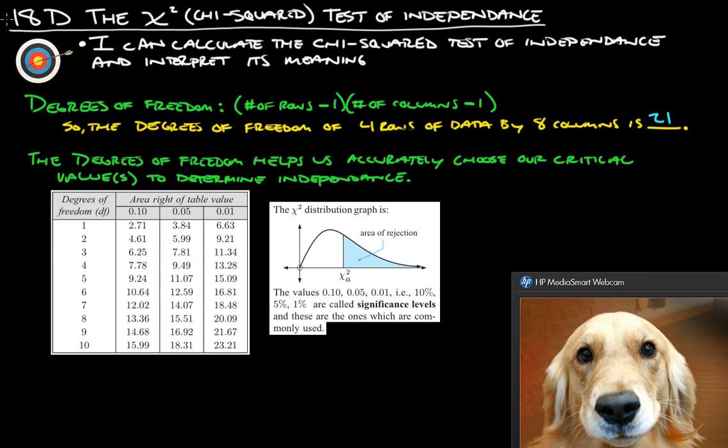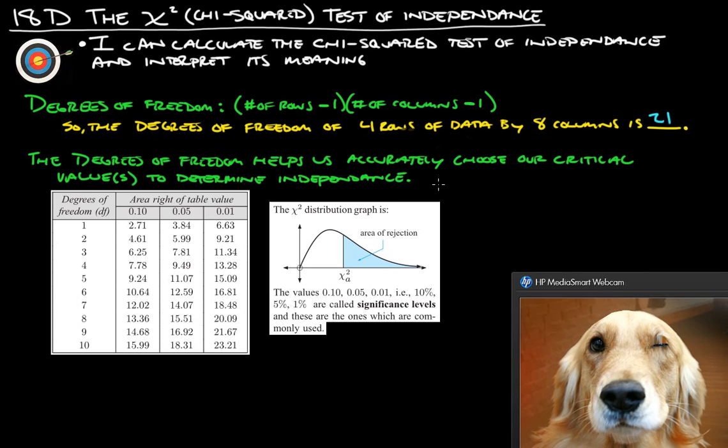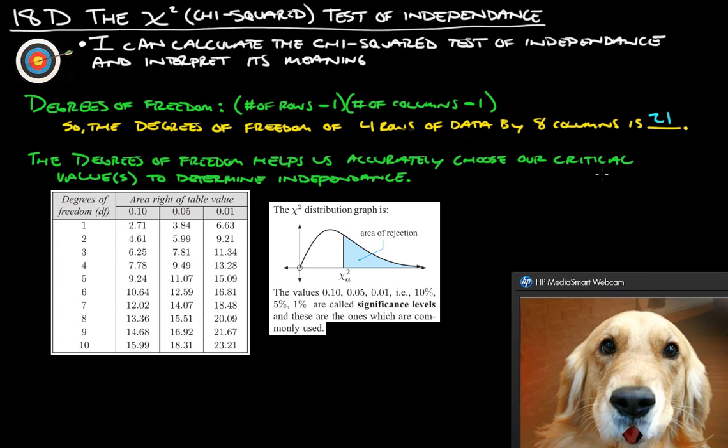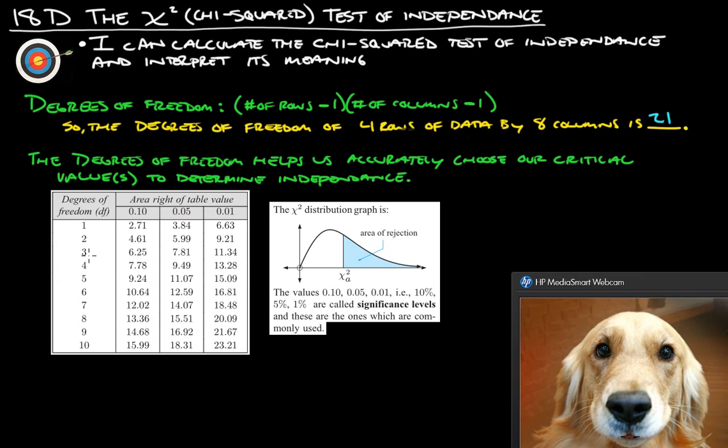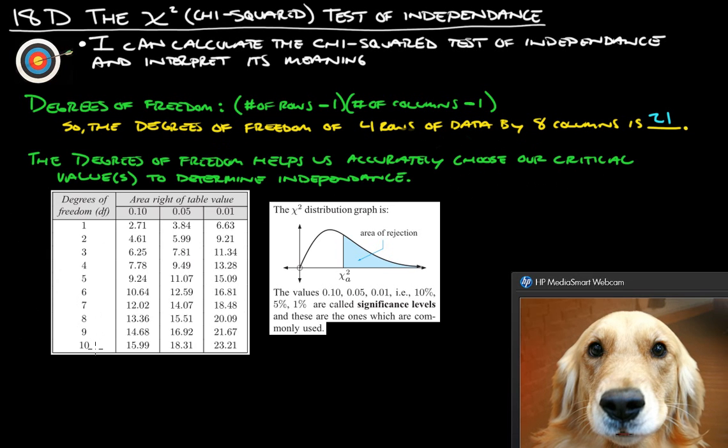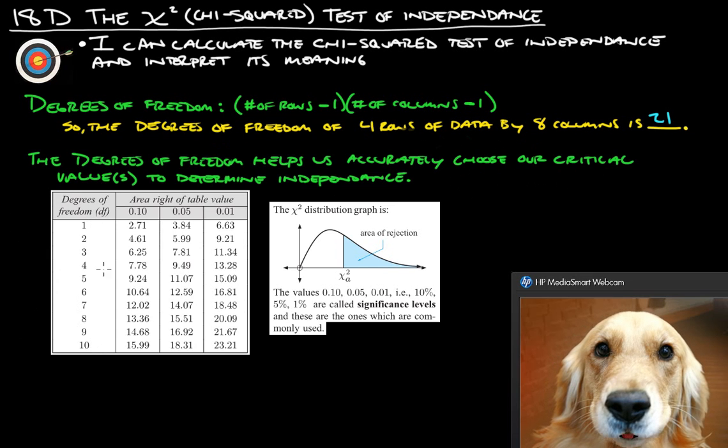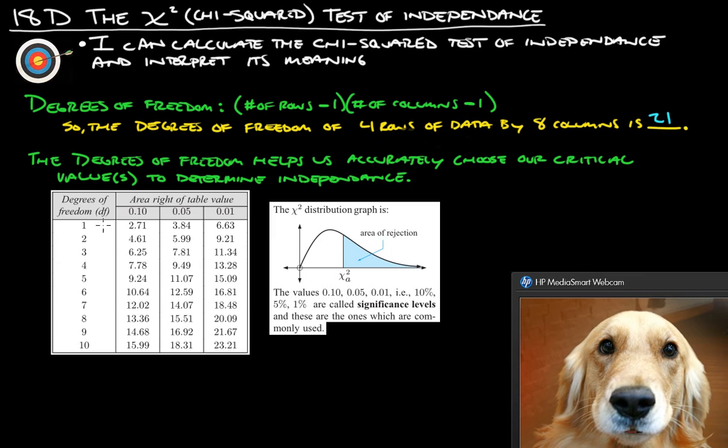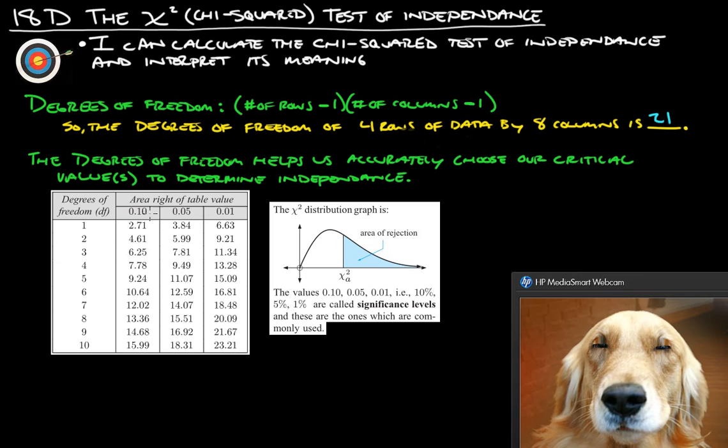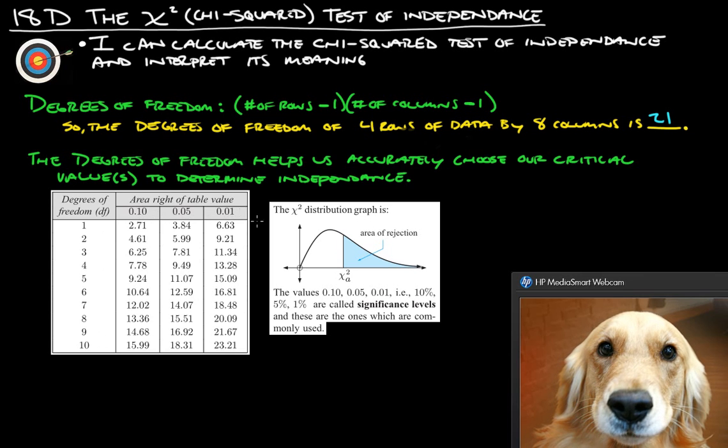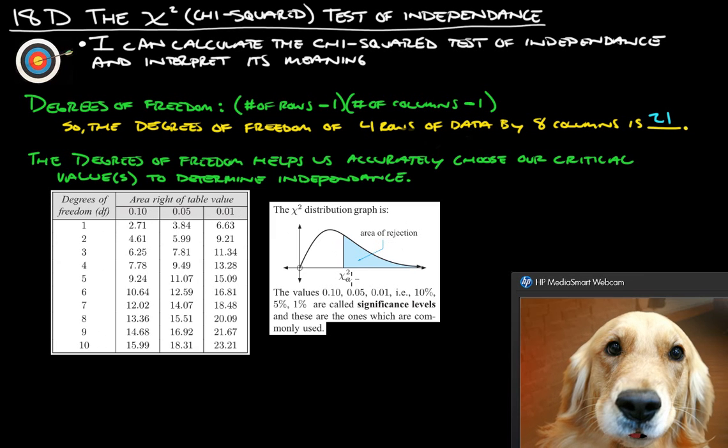So degrees of freedom, simply, it helps us accurately choose our critical values to determine independence. Here's our degrees of freedom table, just up to ten. There's actually the degrees of freedom goes much, much higher. It's basically as high as you need it to go, but this is just the first ten degrees of freedom. And then the area right of the table value: ten percent, five percent, or one percent of the area to the right, the area of rejection, we call it.